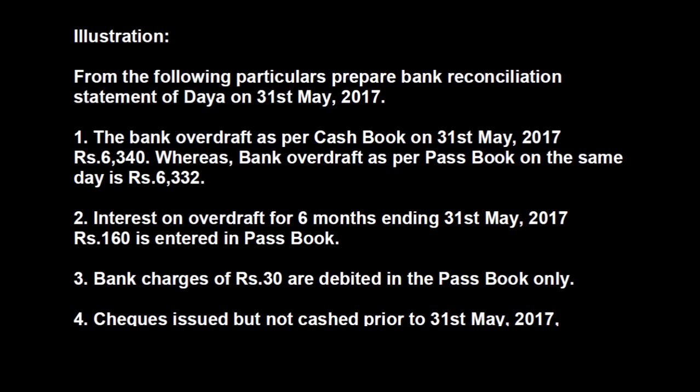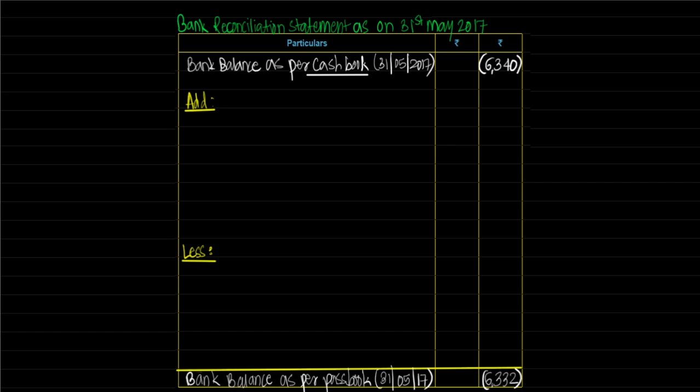Second — interest on overdraft for six months ending 31st May 2017, Rs 160, is entered in passbook only. Interest on overdraft is an expense for us, and it is entered in the passbook but not in the cashbook. An expense not recorded in the cashbook would make the cashbook balance appear higher. So to land on passbook balance, we have to deduct this Rs 160 expense. We write: interest on overdraft unrecorded in cashbook — amount Rs 160.